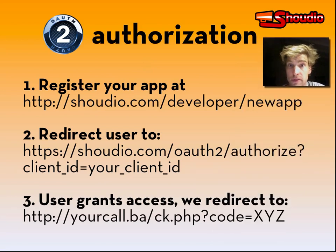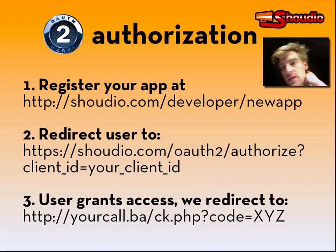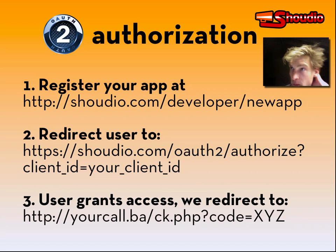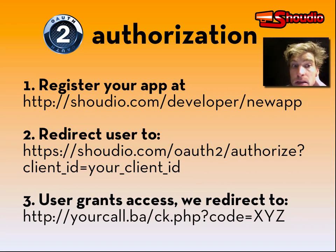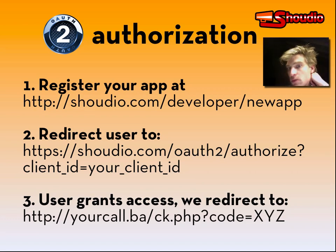Here's how it works. First, you need to register for a free Xaudio account. Once you have your account, you can register an application at xaudio.com/developer/new_app. Once you've set up your app, note down your client ID, client secret, and client key — you'll use those in your auth flow.